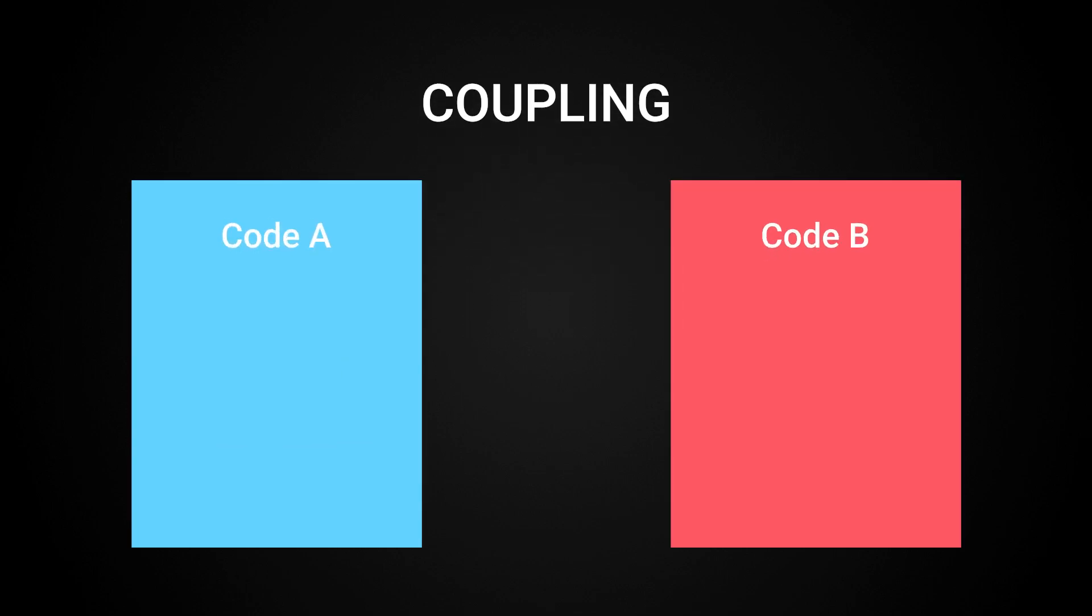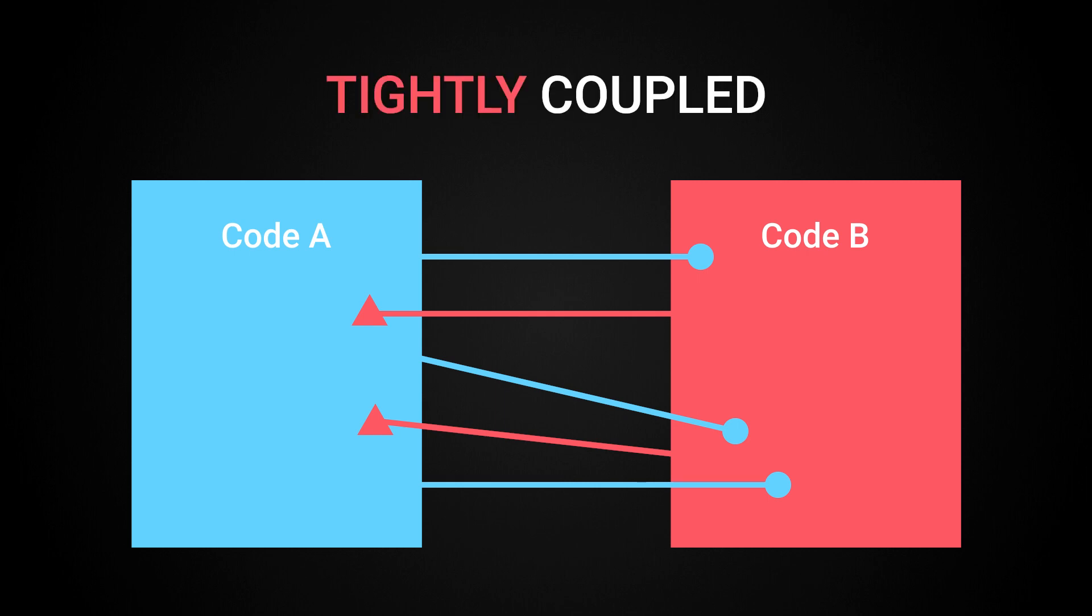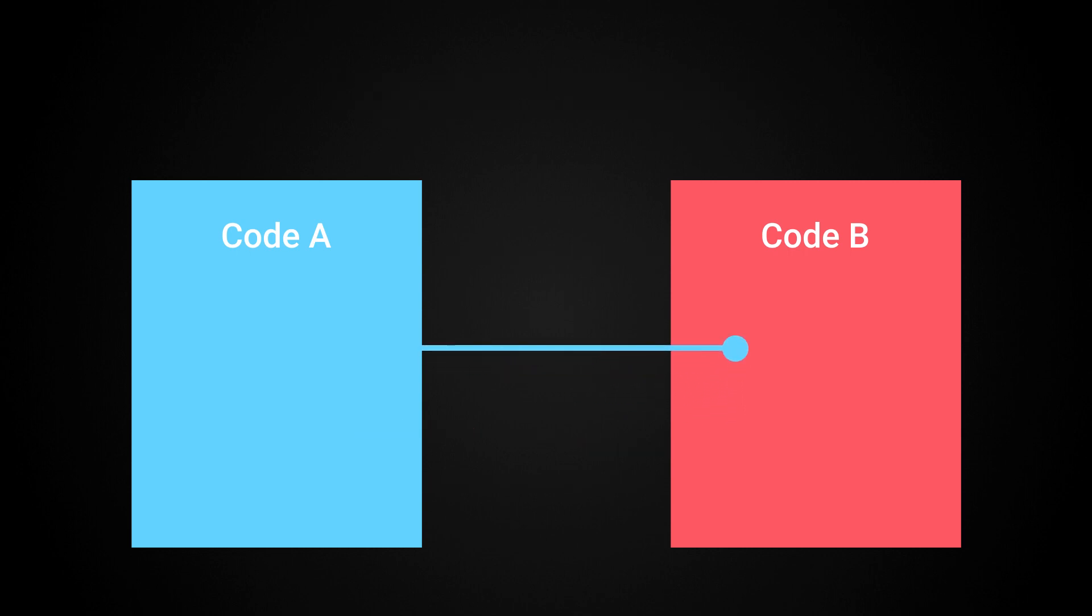Coupling refers to how closely two parts of your system depend on or interact with each other. In one sense, it's how much of the logic and implementation details of these two parts begin to blend together. When two pieces of code are interdependent this way, they are said to be tightly coupled. On the other side, if two pieces of code are highly independent and isolated from each other, they are said to be loosely coupled.